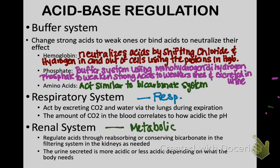Your renal system is your metabolic acid-base regulator. It regulates acids through absorbing or conserving bicarbonate through the filtering system in the kidneys — those nephrons that filter. The urine secreted is more acidic or less acidic depending on what the body needs. If you have a lot of acid in your body, the kidneys will compensate to get rid of that acid. Normal urine pH is around 6, with a range of 4 to 8.